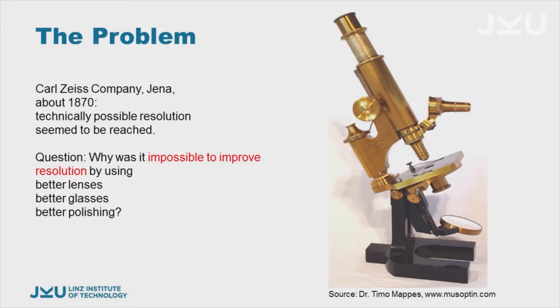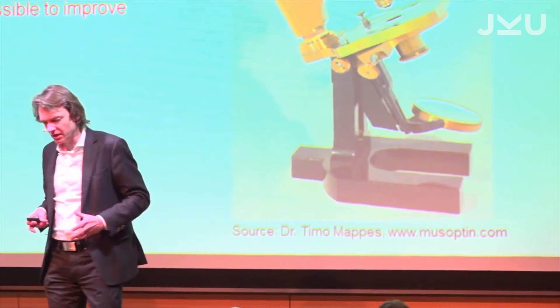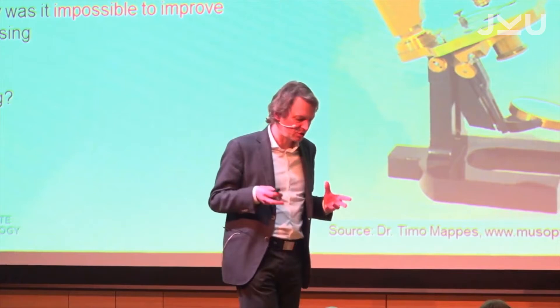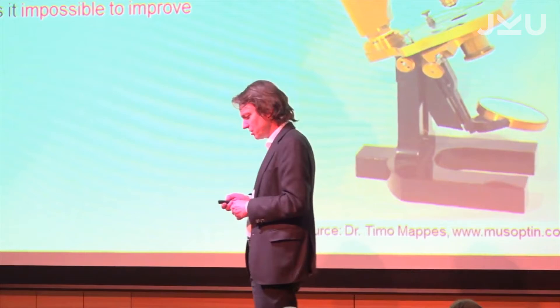The Carl Zeiss company — when Carl Zeiss himself was still alive around 1870 in Jena — they knew that they had the best lenses in the world and the best machine shop in the world, and they recognized that the microscopes didn't get better anymore. They empirically recognized that there is a limit, but they could not explain that limit.